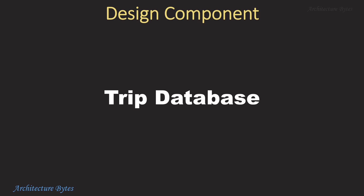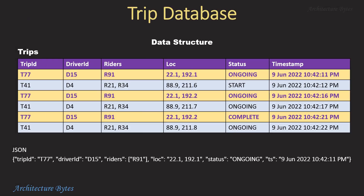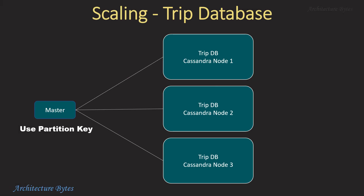The trip database stores trip status updates — this could be a NoSQL database like Cassandra. Looking at a sample trips table, rows with trip ID T77 show that updates are received every 5 seconds: driver D15 is driving and rider R91 is the passenger, with location or status updates changing with every update. You could also structure this as a JSON document if your database supports it. For scaling with Cassandra, a sharded setup is used and it's important to choose the partition key carefully — for example, trip ID.